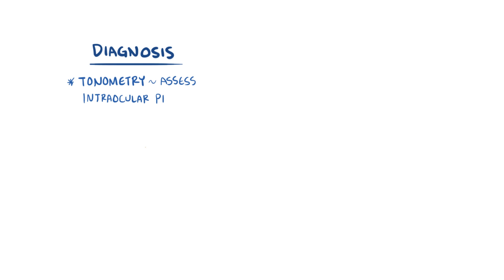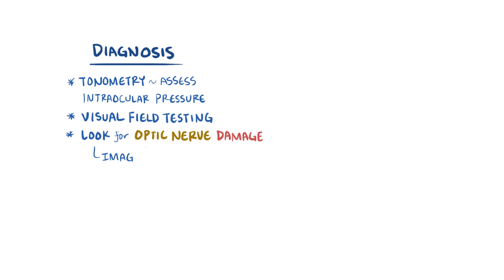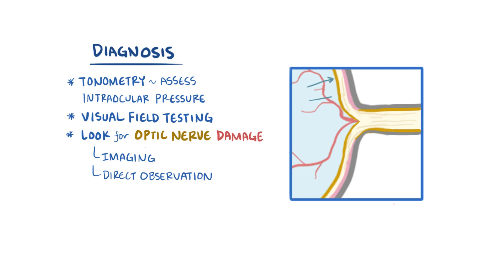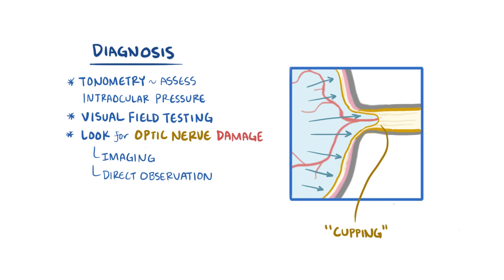For diagnosis of glaucoma, tonometry can be used to assess for increased intraocular pressure. Visual field testing can also be done, as well as looking for optic nerve damage, either through imaging or by direct observation. In particular, that pressure on the optic nerve results in a thinning of the outer rim of the nerve, which starts to give it a cup shape — this is called cupping — and it's often seen in individuals with glaucoma.